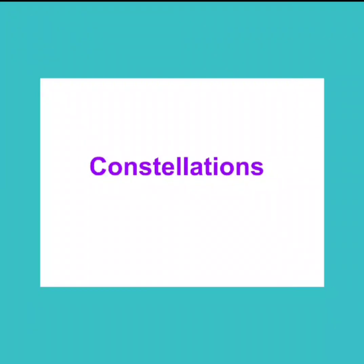Constellations. A small group of stars that seems to form a shape in the sky is called a constellation. Now, children, these constellations are not real. Ancient people imagined the shapes and named them after animals and heroes. Some well-known constellations are the Great Bear, Orion the Hunter, and Leo the Lion.